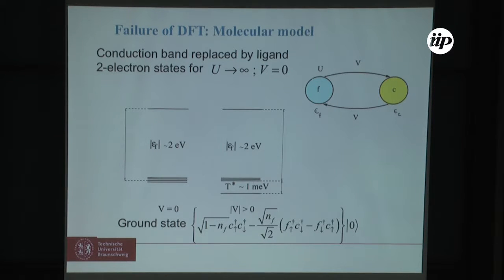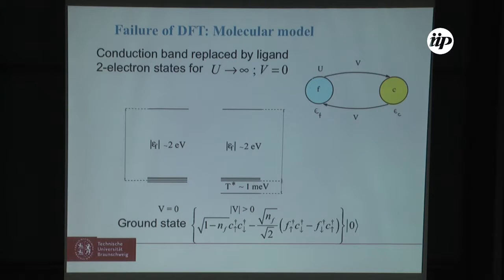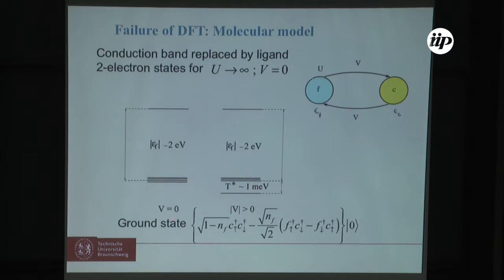Now let's come to the failure of density functional theory — why does it fail in certain situations? This can be seen from a single molecular model, where we replace the conduction band by a single ligand and keep the f-electron site with strong correlations. There is some hybridization transferring an electron from the correlated f-site to the conduction state. Considering a two-electron state, in the absence of hybridization the ground state is fourfold degenerate. Switching on a weak hybridization removes this degeneracy, giving a lowering of the singlet state — a dynamical energy scale.